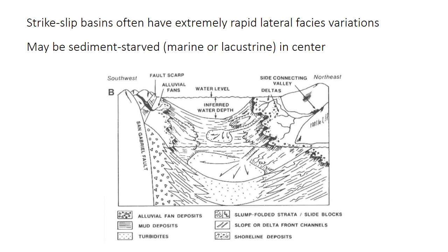Lateral facies transitions can therefore be very abrupt in pull-apart basins. This block diagram shows a cartoon of the facies in the Ridge Basin, a Miocene pull-apart basin in Southern California. There are spectacularly coarse-grained alluvial fan deposits along the formerly active fault scarp on the left — the San Gabriel Fault — but they grade laterally into fine-grained sediments over only a few hundred meters or a couple of kilometers. Very little sediment makes it into the middle of the basin; it gets trapped at the margins in the rapidly created accommodation space. So the basin center can be sediment-starved, with very low rates of sediment accumulation, resulting in either a lacustrine or marine environment.